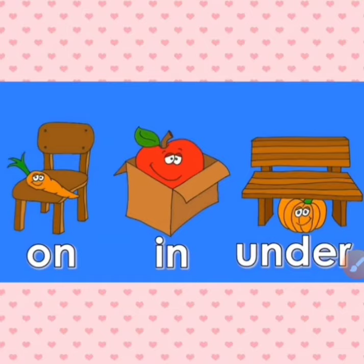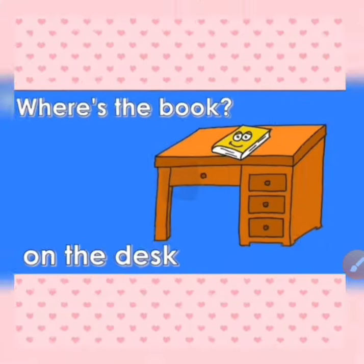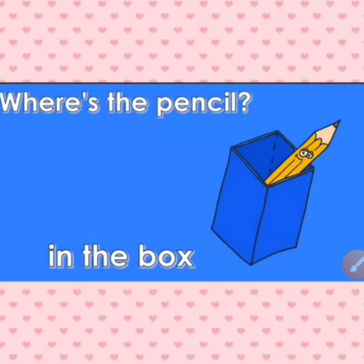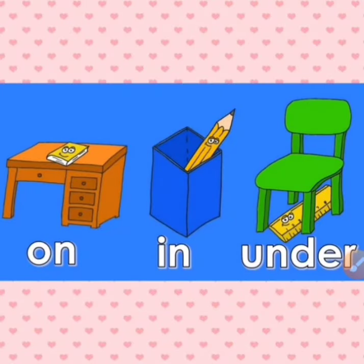So let's see again: on, in, under — on the chair, in the box, under the bench. Let's see one more example. Where's the book? On the desk — on the desk. Where's the pencil? In the box — in the box. So: on the desk, in the box, under the chair.